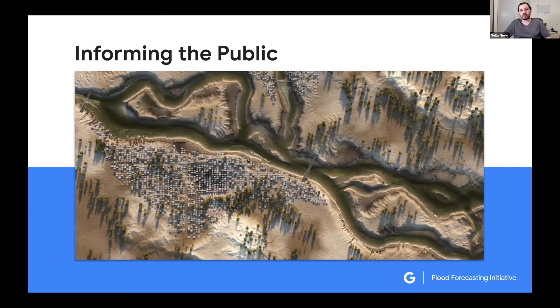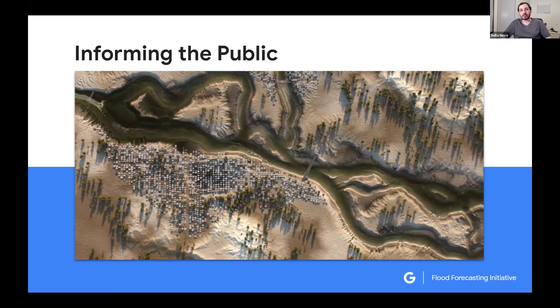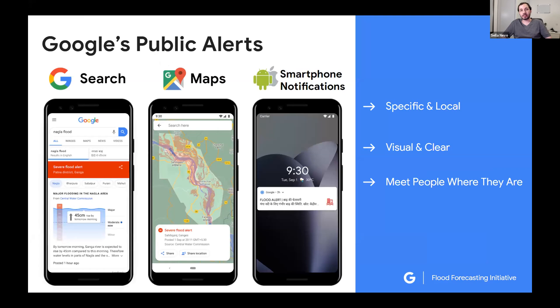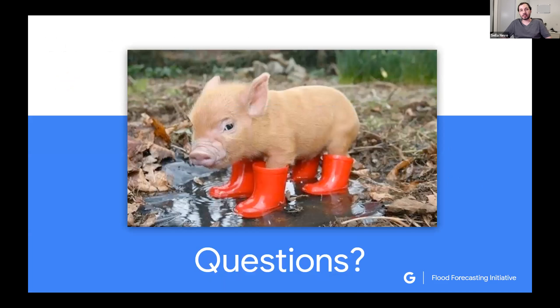Finally, none of this is useful if it doesn't reach the right people at the right time. We use Google's public alerts infrastructure to notify millions of people within minutes of an alert — either based on alerts from governments and disaster management agencies, or based on the models we developed in partnership with relevant governments. We put a strong emphasis on making things visual, providing local information, making them interactive, and supporting local languages. Just over the past few months, we've sent active flood warnings to more than 10 million people. That was a quick overview of what we think are the most interesting challenges and what we've done so far to address them.